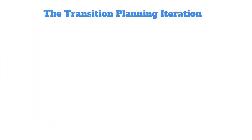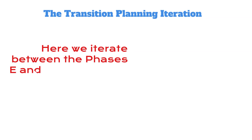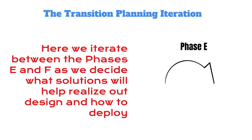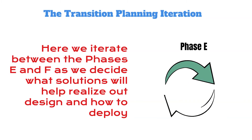The transition planning iteration: here we iterate between opportunities and solutions and migration planning, phases E and F. We try to rationalize and realize the solutions that will help us actualize our design.